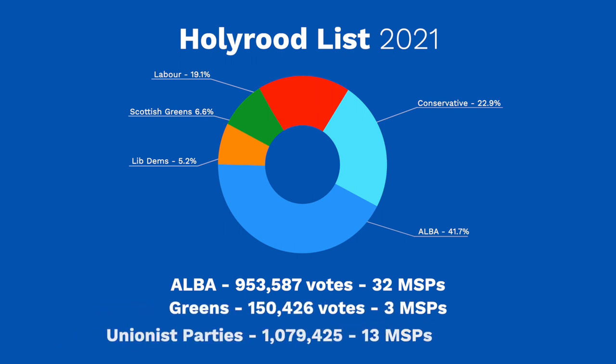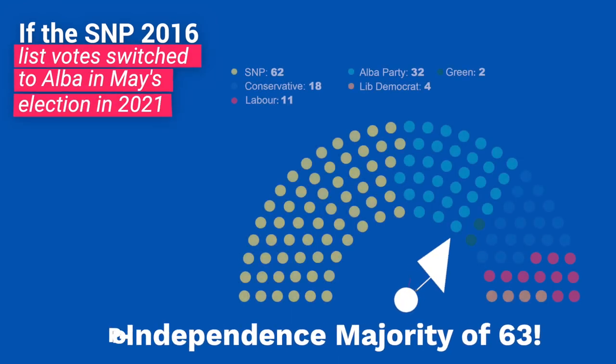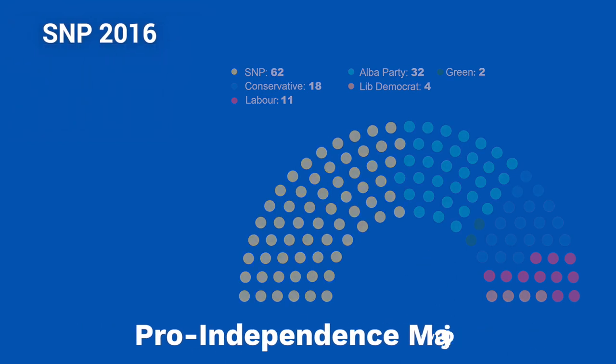If the same voting pattern occurred in this year's election, with only the SNP list vote going to ALBA, ALBA would pick up 32 list seats, the Greens 3, and the Unionist parties a combined total of only 13. This would give the pro-independence parties 96 seats overall and a majority of 63.